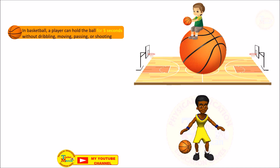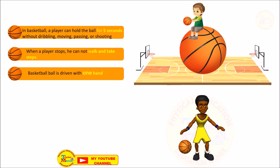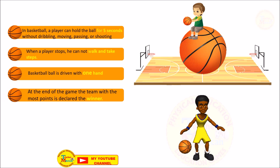In basketball, a player can hold the ball for five seconds without dribbling, moving, passing, or shooting. When a player stops, he cannot walk and take steps. The basketball is dribbled with one hand. At the end of the game, the team with the most points is declared the winner.